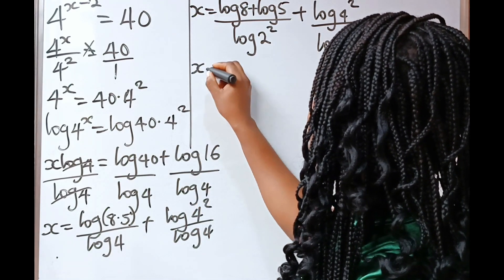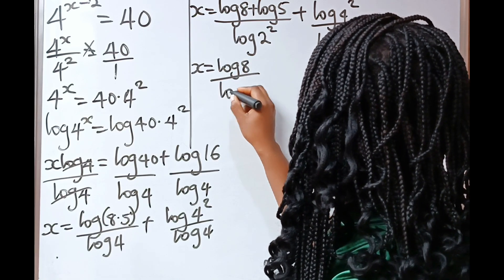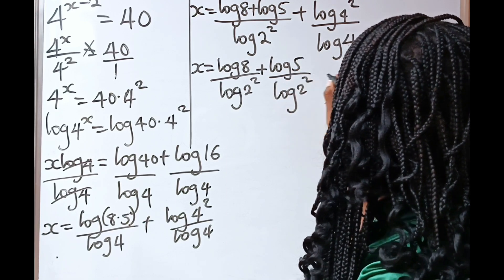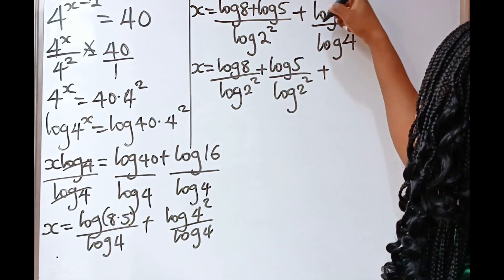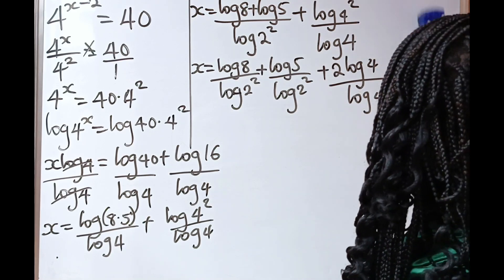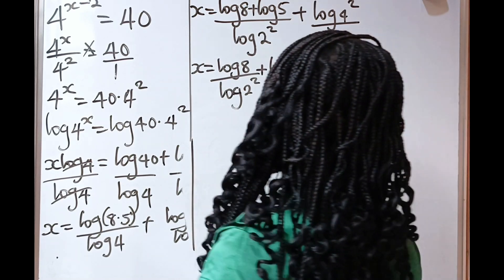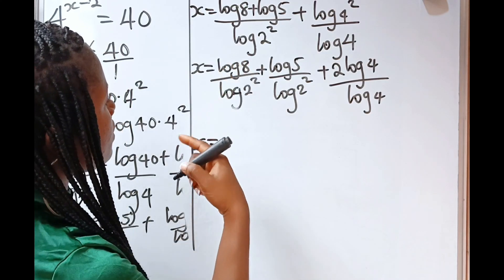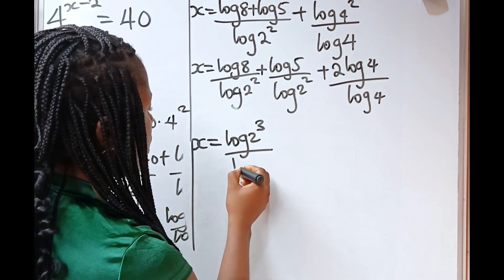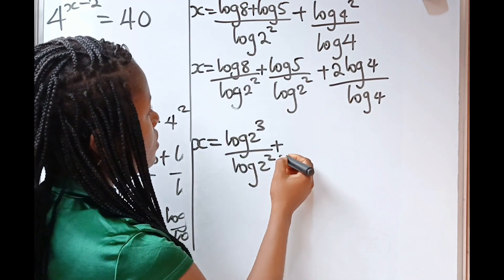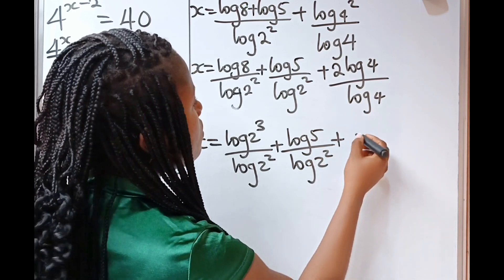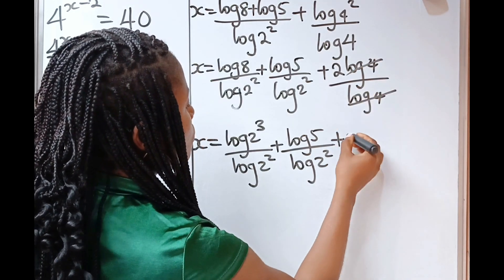So this will give us x is equal to log 8 divided by log 2 squared plus log 5 divided by log 2 squared. I'm distributing the denominator. Plus, this will come down using the power rule to give us 2 log 4 divided by log 4. Now, this will cancel this, and this will cancel this, to give us 2.